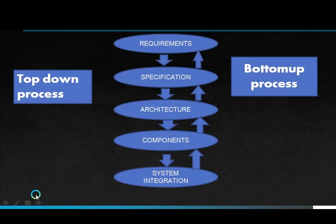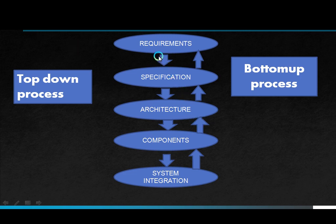Designing an embedded system is a simple process with mainly five steps: first, requirements; second, specification; third, architecture; fourth, components; and fifth, system integration. There are also two directions of process: from requirements to system integration is a top-down process, and from system integration to requirements is a bottom-up process.